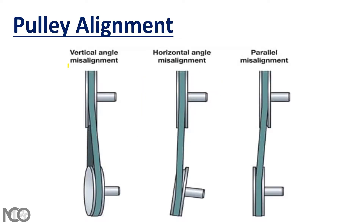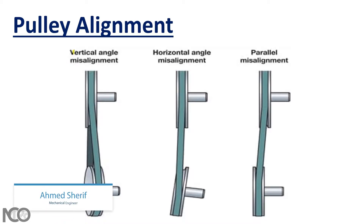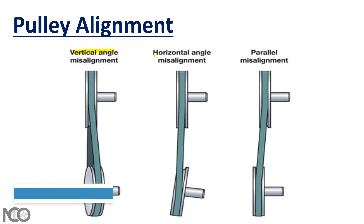Pulley alignment misalignment consists of three types: vertical angle misalignment, horizontal angle misalignment, and parallel misalignment. These three types can coexist in any combination at your equipment, but to detect the misalignment type, there are several pulley alignment methods.